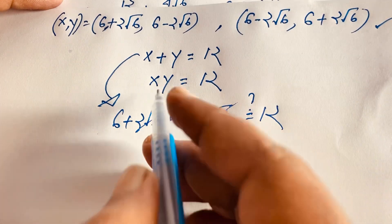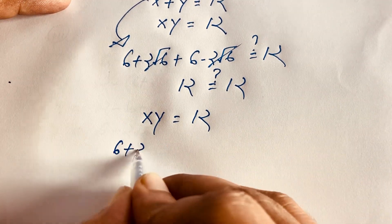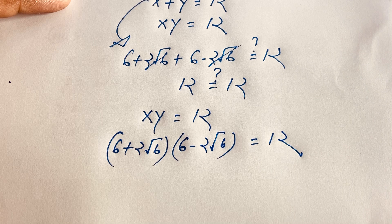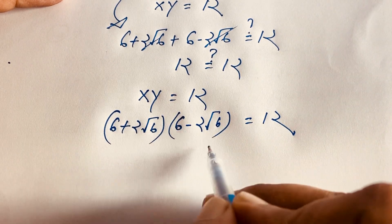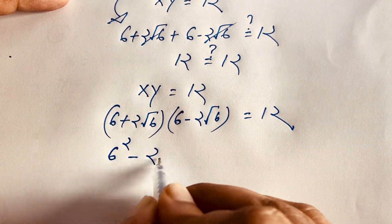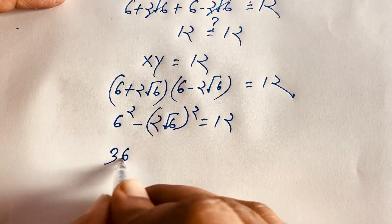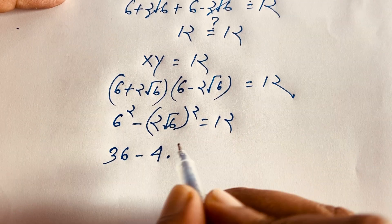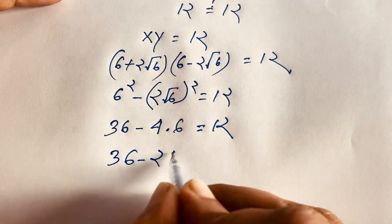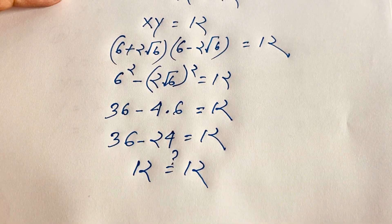Now verifying x times y equals 12: (6 plus 2 root 6) times (6 minus 2 root 6). Using the identity (a plus b)(a minus b) equals a squared minus b squared, this becomes 6 squared minus (2 root 6) squared, which equals 36 minus 4 times 6, which is 36 minus 24, equals 12. Left-hand side equals right-hand side, so our answer is verified.